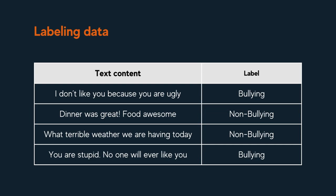Firstly, a human attaches a label to each text content as either bullying content or non-bullying content. There can be some other categories like somewhat bullying content, but we will focus only on two categories in this example, as seen in the table. In our table, we have some examples in each category.